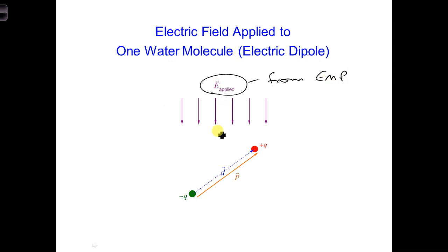So right now we're going to consider that it's in the downward direction. E_applied is incident on the water molecule as shown here for now. Can you figure out what effect E_applied will have on this water molecule?